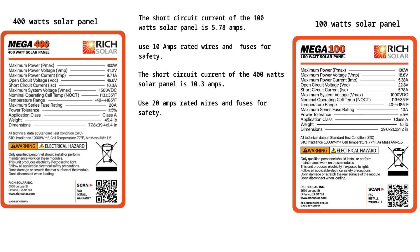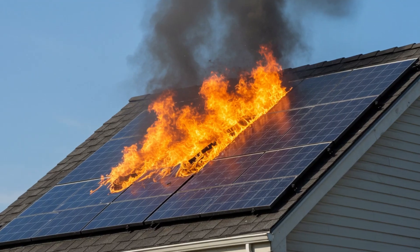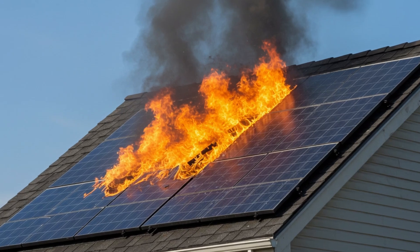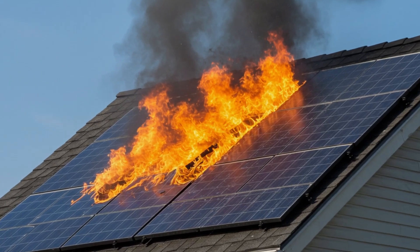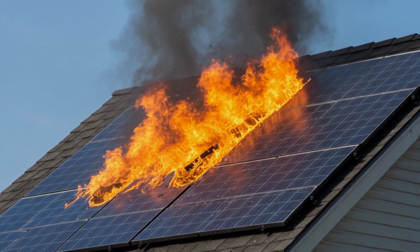This shows that the 400-watt solar panel requires thicker cables compared to the 100-watt solar panel due to the higher amps it produces. This will help avoid overheating. Using thin wire below the required size is one of the things that lead to fire outbreaks in solar arrays, so always make sure you use the right wire and fuse rating.